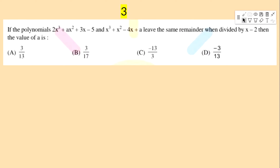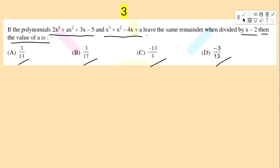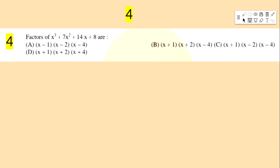Next question: if the polynomials 2x³ + ax² + 3x − 5 and x³ + x² − 4x + a leave the same remainder when divided by x − 2, then the value of a is — options: 3/13, 3/17, −13/3, −3/13.